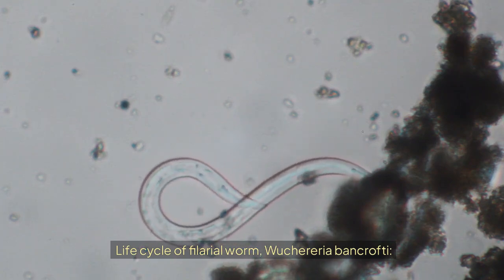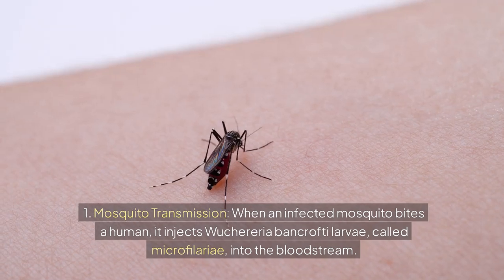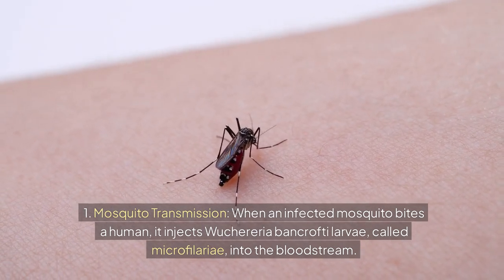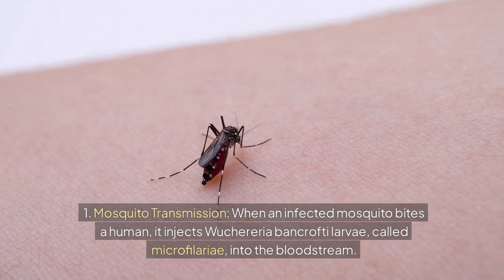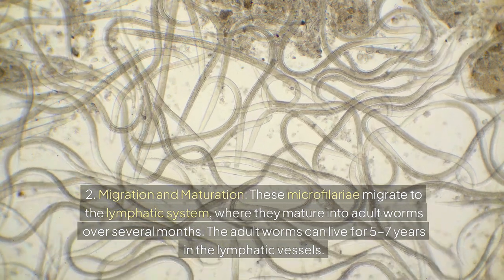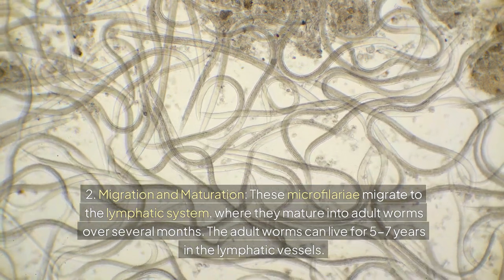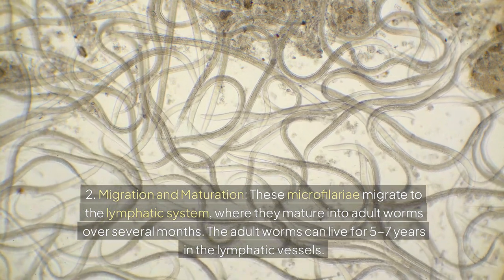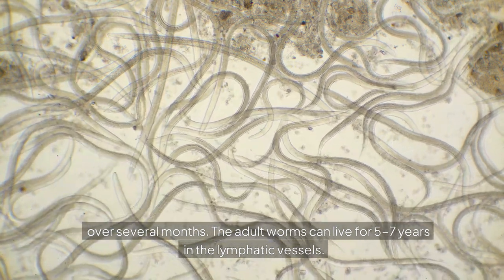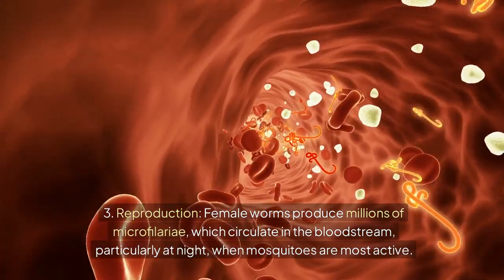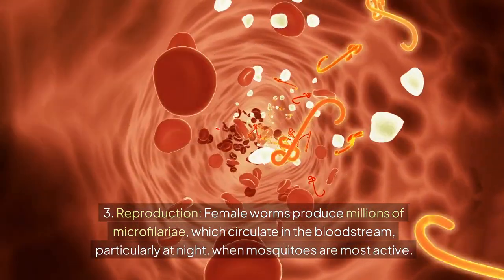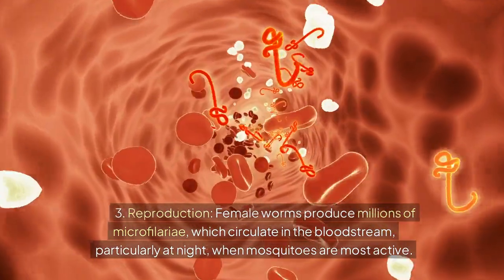Life cycle of Wuchereria bancrofti. Step 1: Mosquito Transmission. When an infected mosquito bites a human, it injects Wuchereria bancrofti larvae, called microfilariae, into the bloodstream. Step 2: Migration and Maturation. These microfilariae migrate to the lymphatic system, where they mature into adult worms over several months. The adult worms can live for 5–7 years in the lymphatic vessels. Step 3: Reproduction. Female worms produce millions of microfilariae, which circulate in the bloodstream, particularly at night, when mosquitoes are most active.